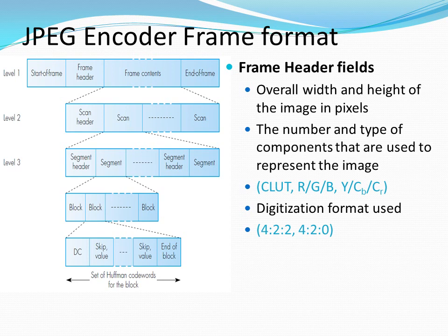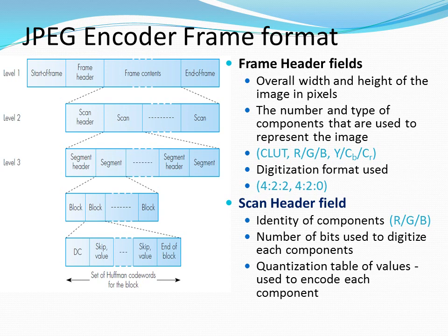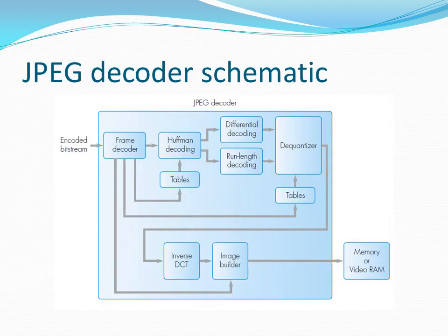The frame header field indicates the overall width and height of an image and the number and type of components used to represent the values — the type can be RGB or YCbCr — and the digitization format used. In the scan header field, you have the component representation (RGB) and the bits used to digitize the components. This is the JPEG decoder schematic, which performs the reverse operation of the JPEG encoder. The encoded bitstream is given to a frame decoder, then Huffman decoding, differential decoding, and run-length decoding. These coefficients are then dequantized using the same tables used on the encoder side. The dequantized coefficients are applied to the inverse discrete cosine transform to recover the pixel values, which are used to build the image for display or storage in memory or video RAM.